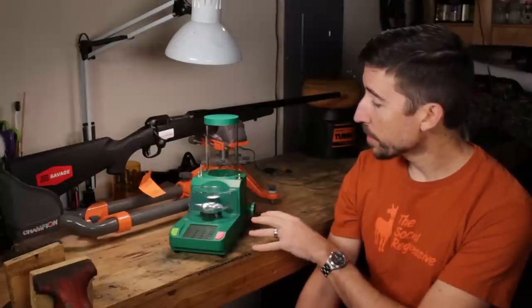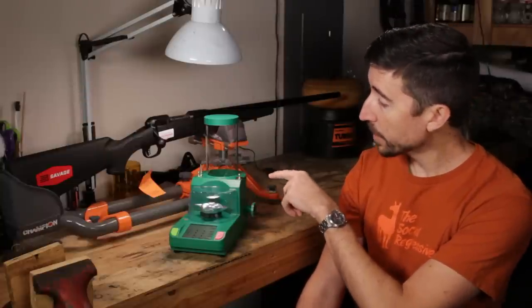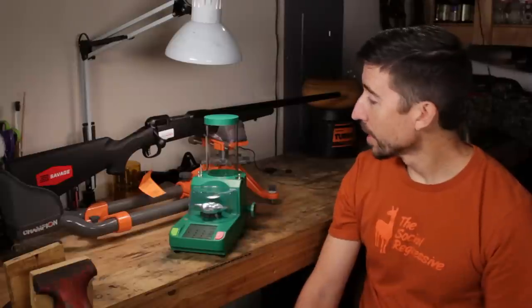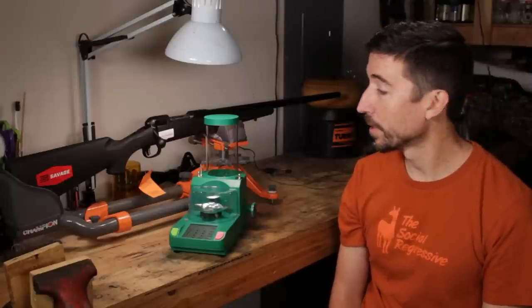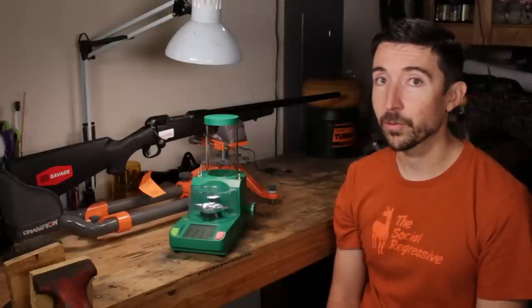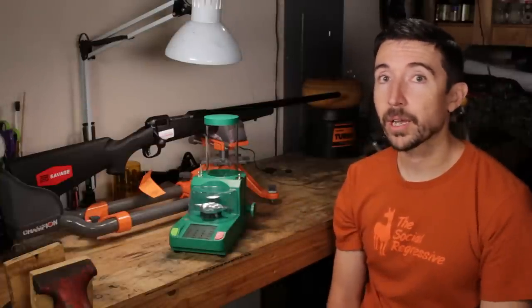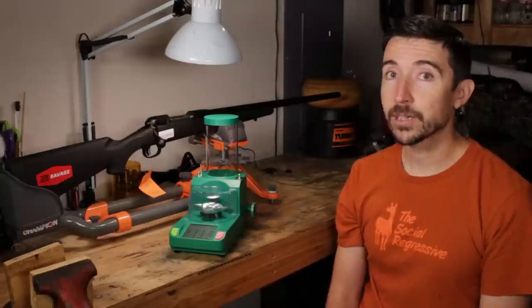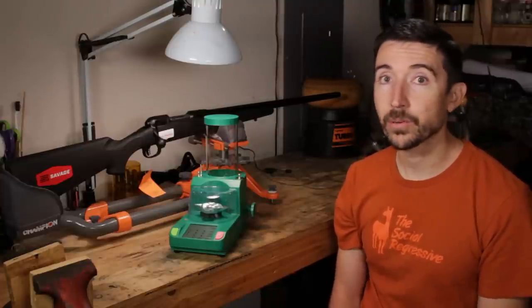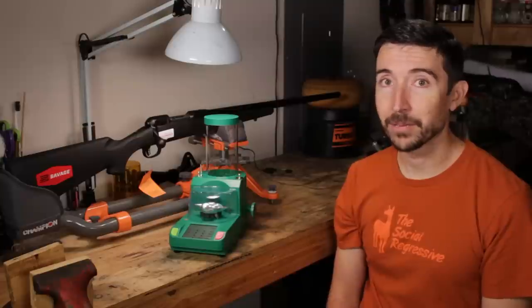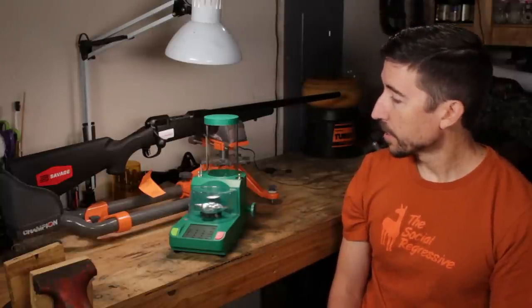Real quick before we jump into what I consider to be the backbone of my reloading now, this is an RCBS Chargemaster Lite. It's a combination powder dispenser, trickler, and scale thing that I think you guys are really going to enjoy seeing how this works. I kind of consider this the backbone of my reloading now, just because of what this thing can do for especially centerfire rifle stuff. It's going to simplify things and speed things up quite a bit. Before I do, I wanted to give a shout out to my patrons of the destructive arts out on Patreon, especially Denver Loveless, my 300 Win Mag Patron, and also thank you to RCBS who sent me this scale to play with.